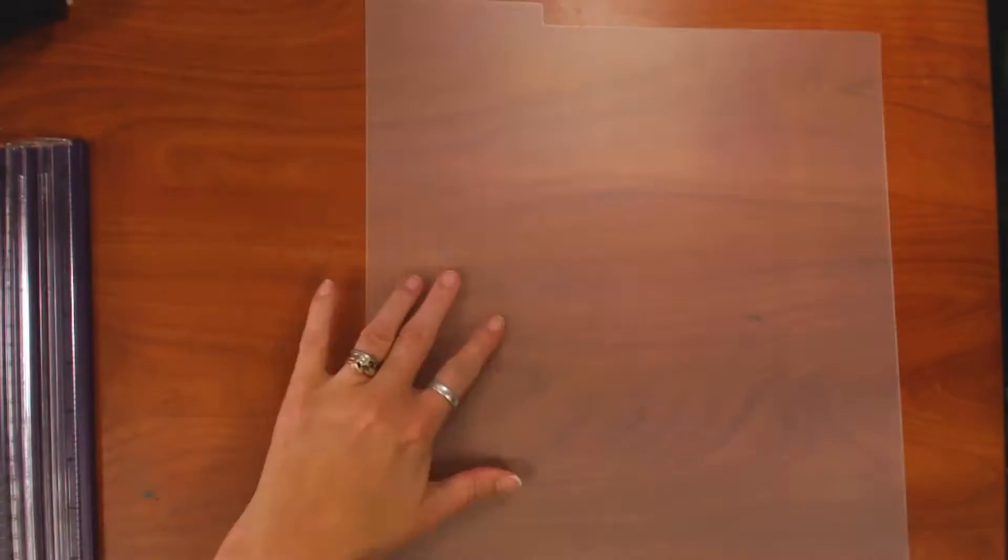For this example, I'm going to use these dividers that came in these holders, these 12 by 12 holders for scrap paper sheets. As you can see, it's thick but flexible plastic. And you can pretty much use any thick, flexible plastic.